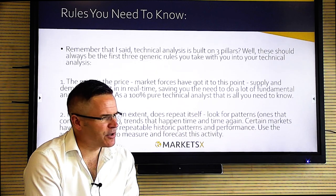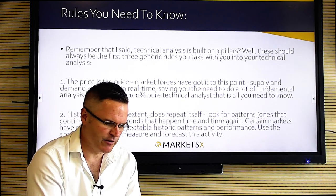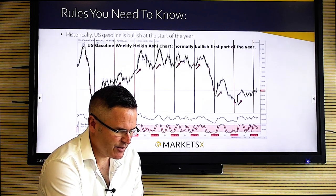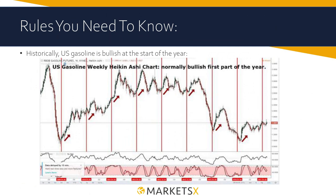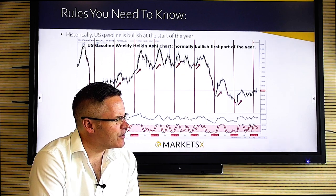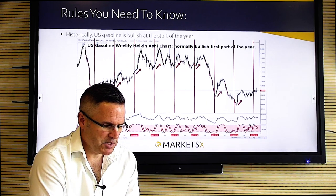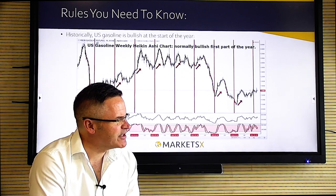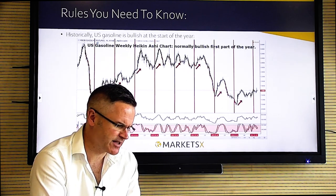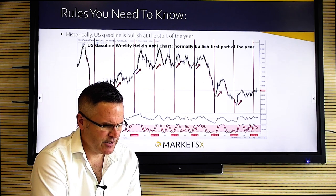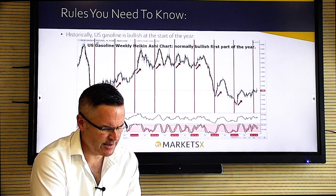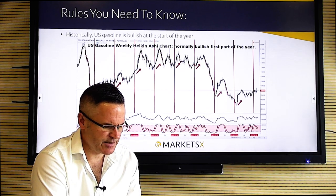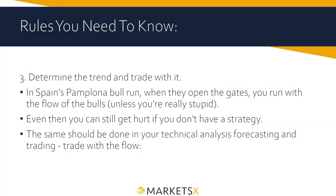Rule two: history repeats itself. There are patterns in technical analysis — mathematicians would say everything's random, but I can show you thousands of charts where things happen over and over again, enough to give you an edge. A typical example is US gasoline: in the first half of the year the price is bullish as people build up for the summer driving season — a fundamentally driven pattern you can see much more easily through technical analysis.